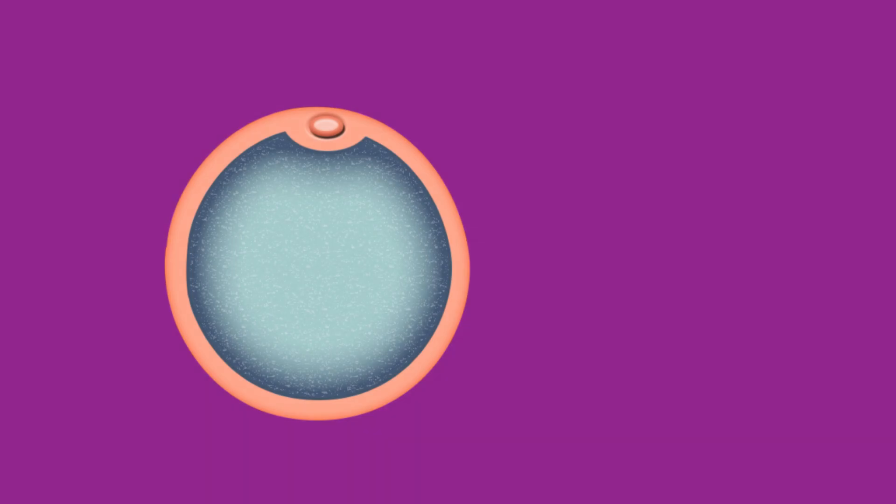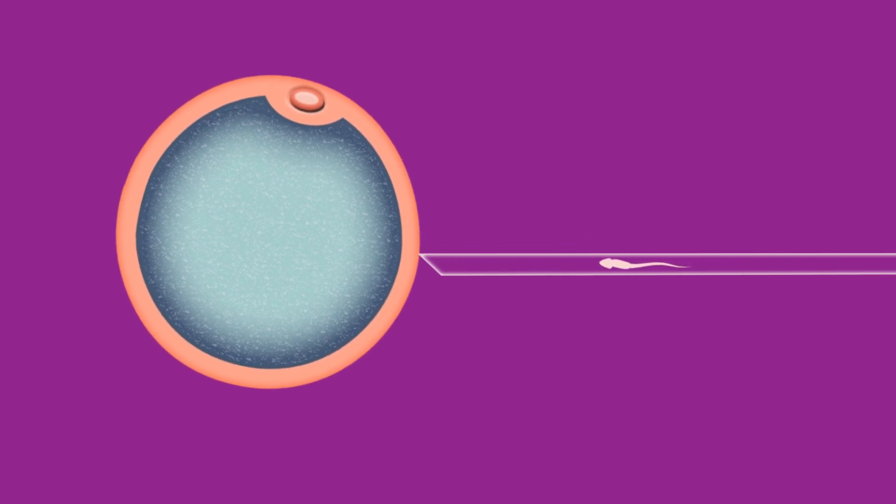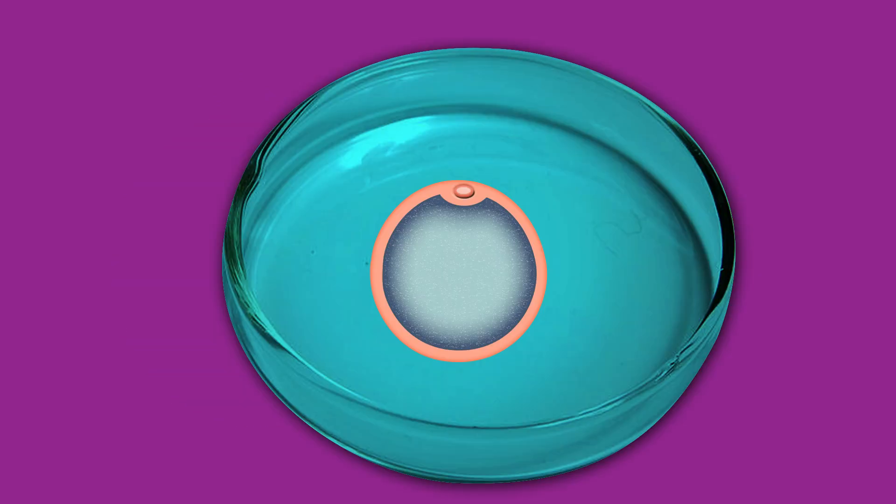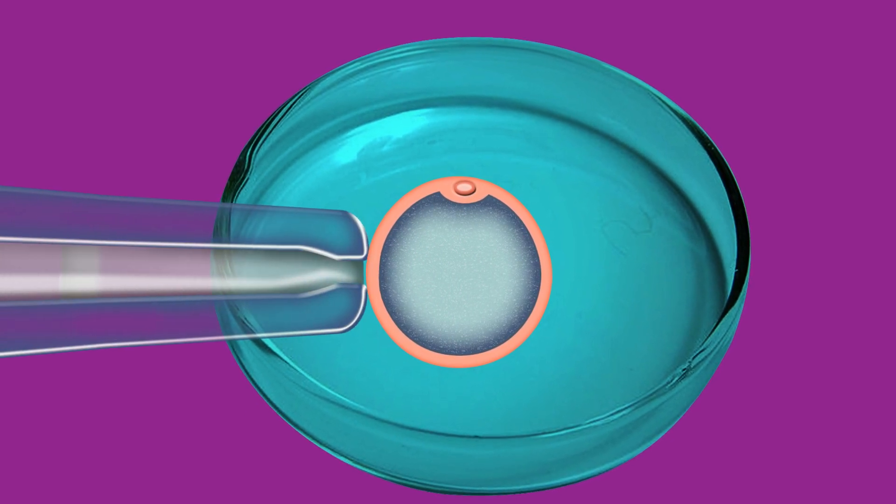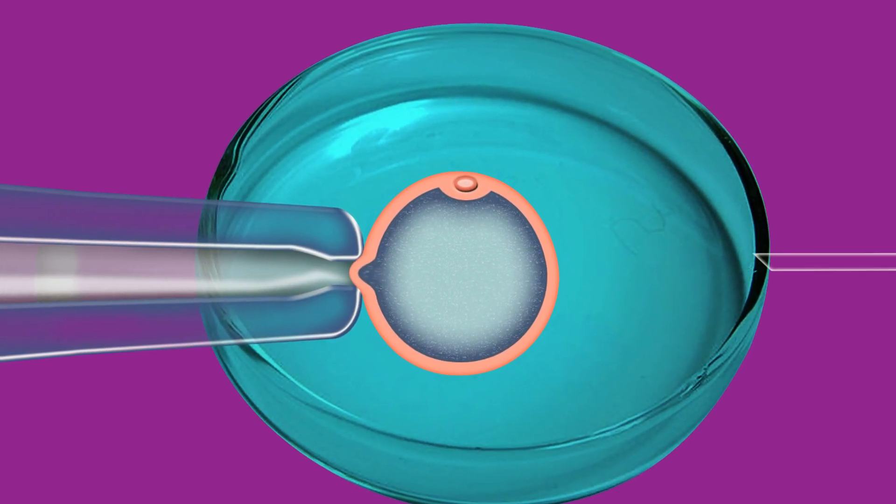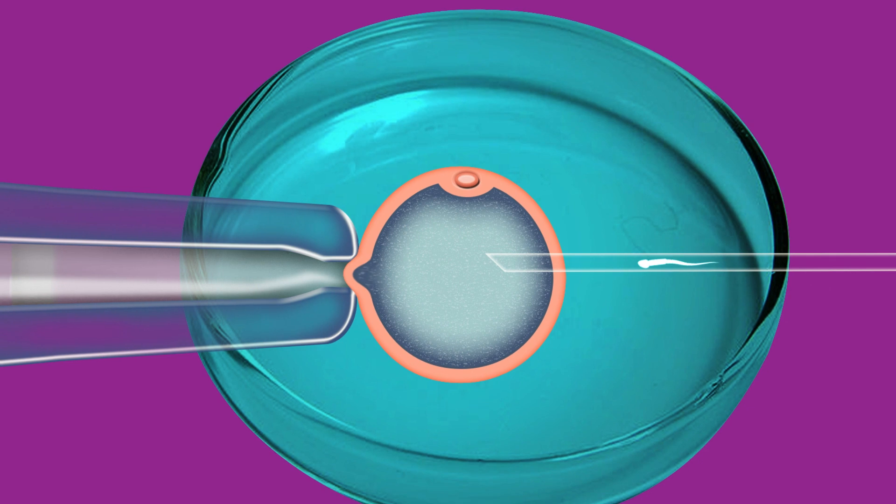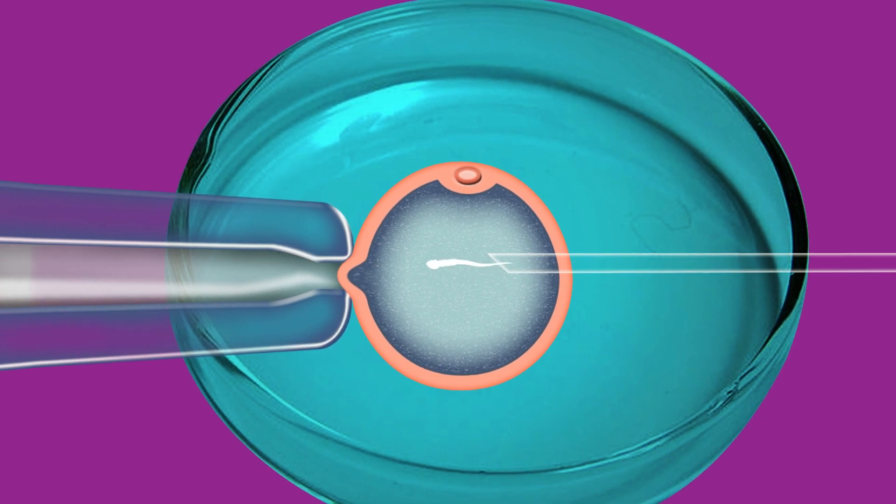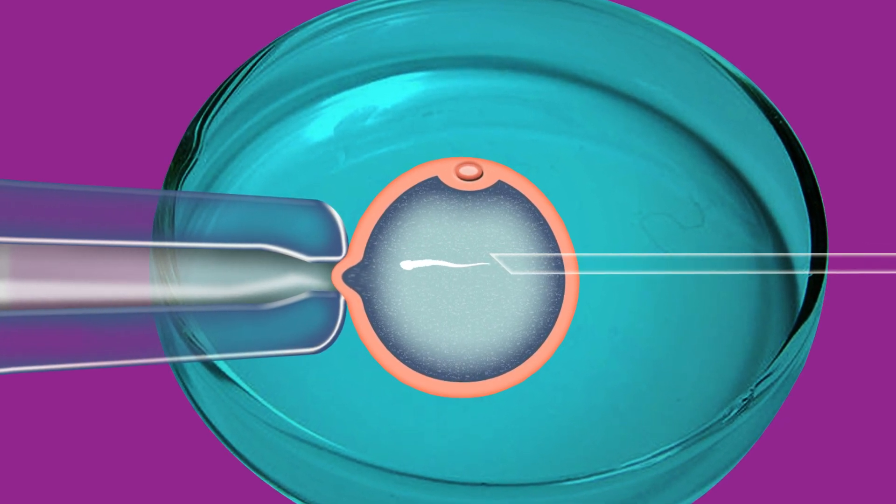During ICSI, an embryologist ensures that the oocyte remains in place while the sperm is injected into it using an injection pipette. For this purpose, the embryologist uses a holding pipette. A small suction pressure applied through the pipette aspirates a small portion of the oocyte and holds it in place.